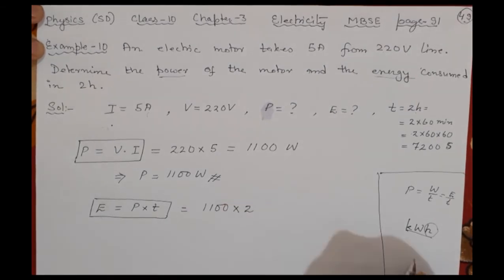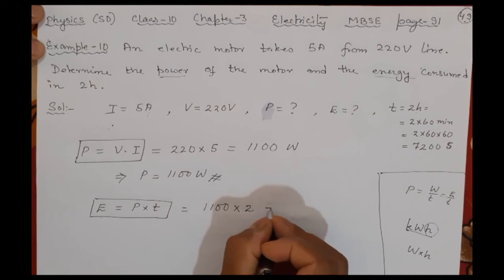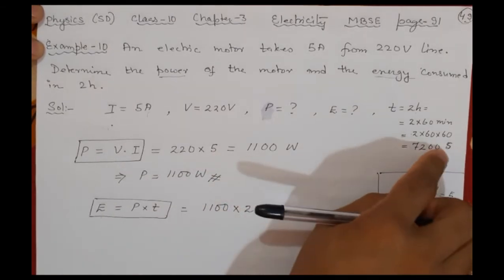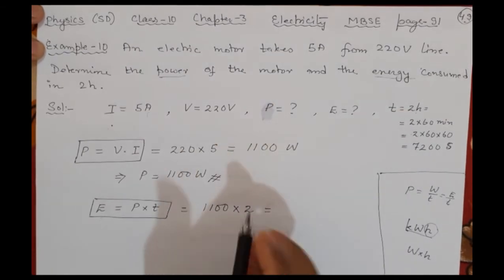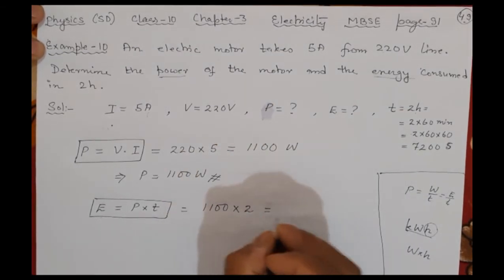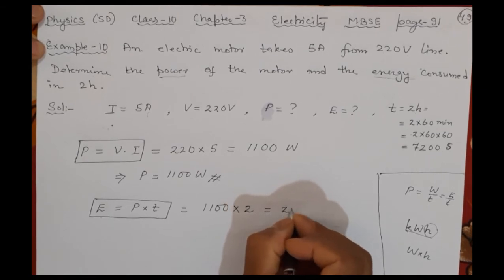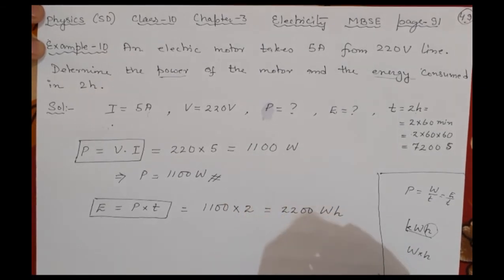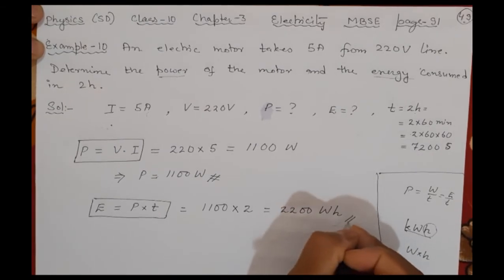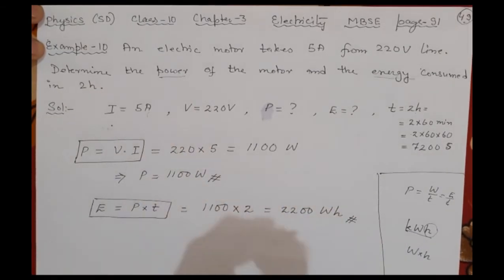I'll use hours directly, so that it will come into watt-hour. If you write in seconds also there is nothing wrong - it will just make it easier if you write directly in hours. Two... 11 × 2 is 2200 watt-hour. This is the unit of power. Also more popular is kilowatt, that means divided by 1000.